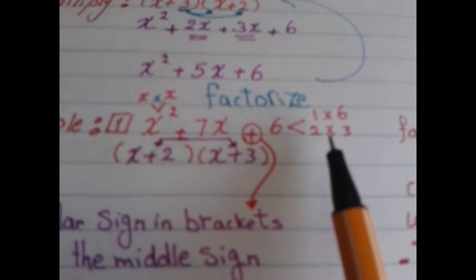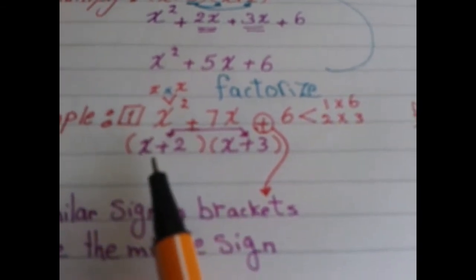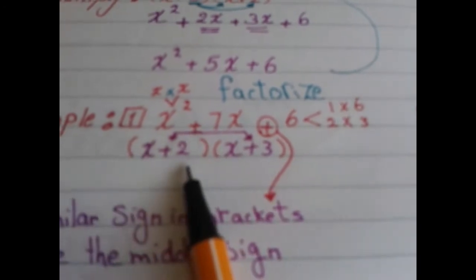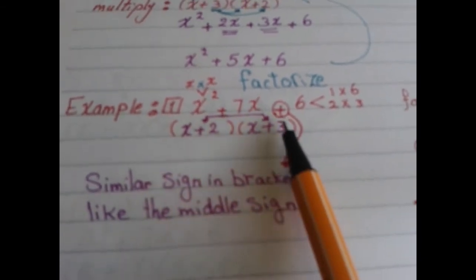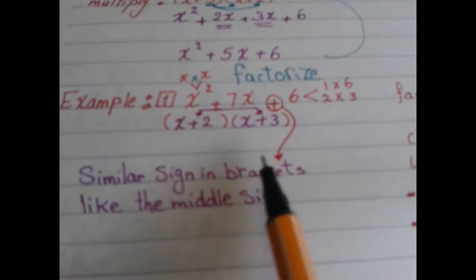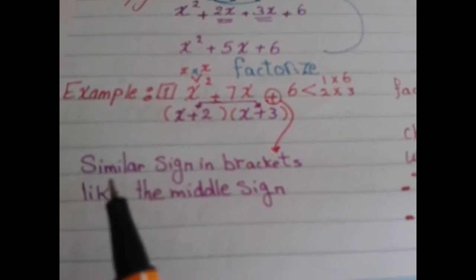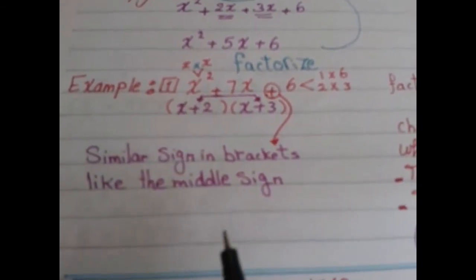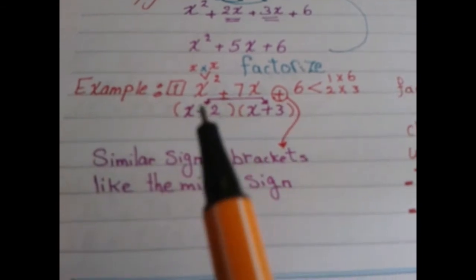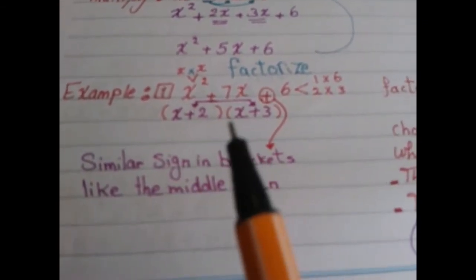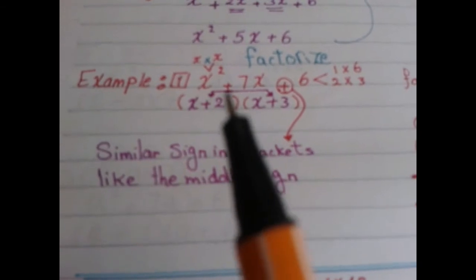1 times 6 equals 6, and 1 plus 6 equals 7 — yes, that's 7. But 2 times 3 equals 6 and 2 plus 3 equals 5, which is not 7. So we choose 1 and 6. For the signs: the last sign is positive, so we use similar signs in both brackets, matching the middle sign — which is positive — giving (x + 1)(x + 6).